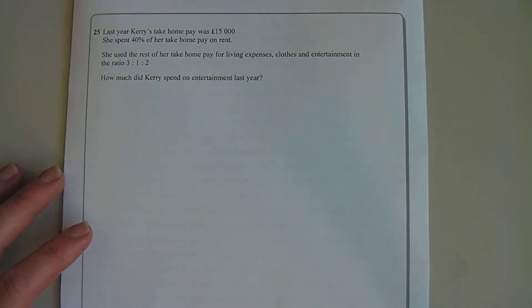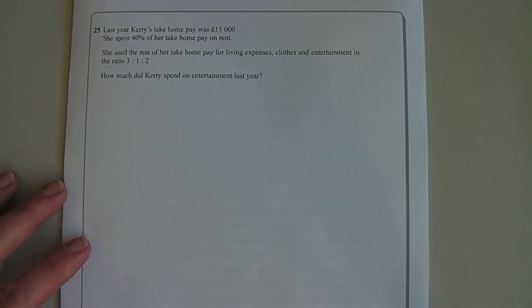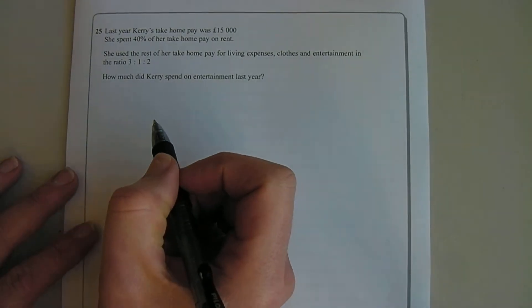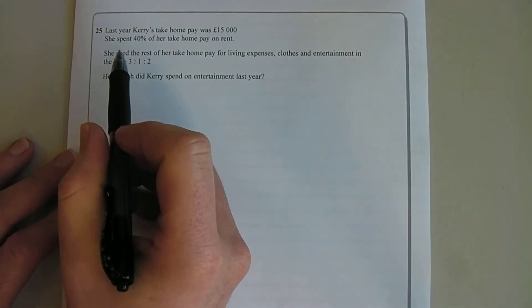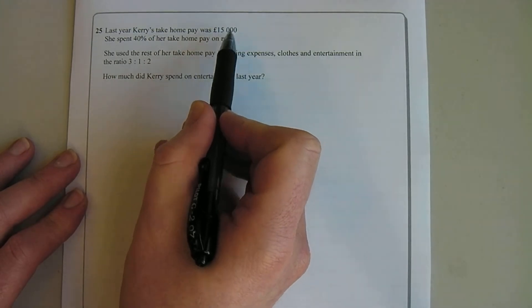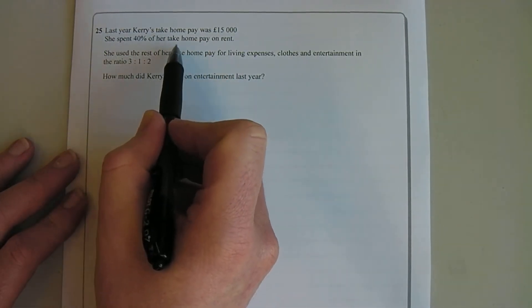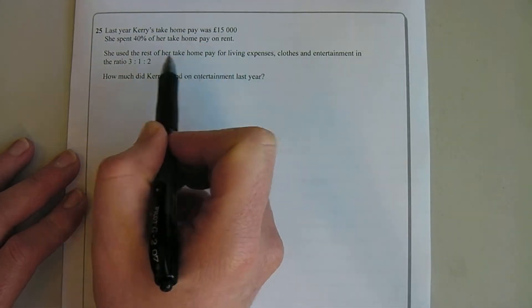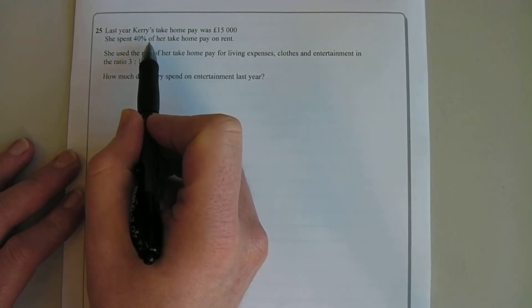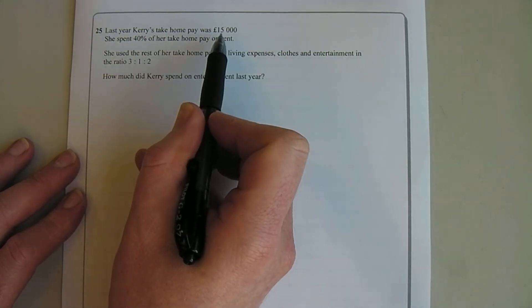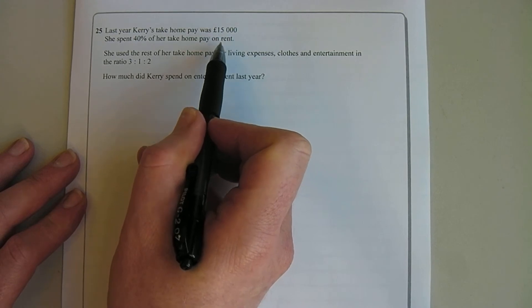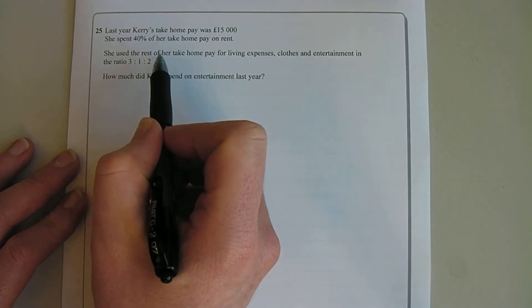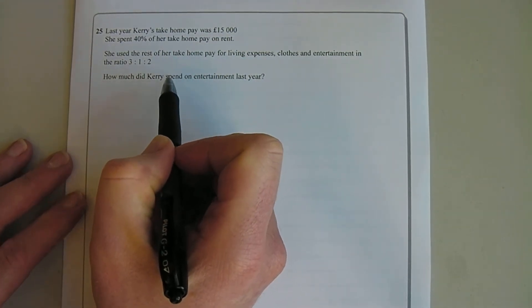This is a four mark question, so we're looking to do four things to get all the marks. So let's start off with the first bit. Last year Kerry's take-home pay was £15,000. She spent 40% of her take-home pay on the rent and she used the rest of the thing. So we need to work out 40% of the £15,000 that she spent on rent. And so then we know the 60% that she's got to spend on everything else. So that's going to be our first step.